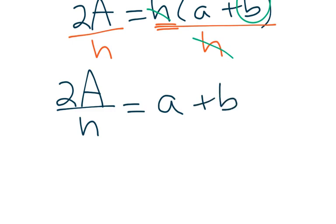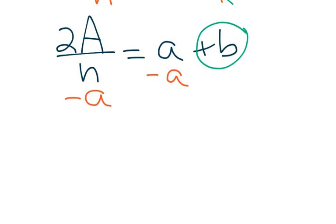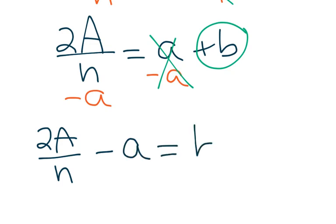Remember again, we're trying to get this b by itself, but to do that I need to get rid of that a. So I'm going to do the opposite, which is subtract a on both sides. If I do that, notice those a's cancel and I'm left with 2A/h - a on the left-hand side, and that equals b.